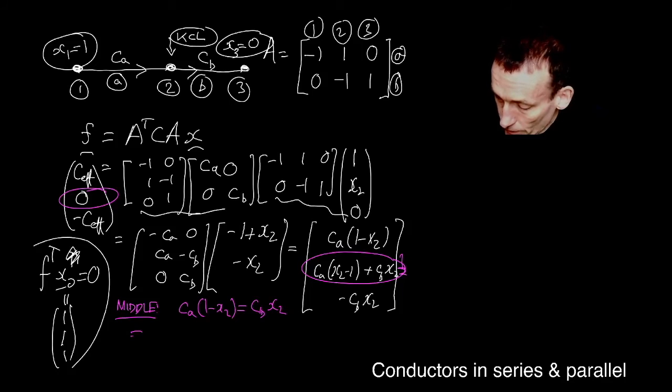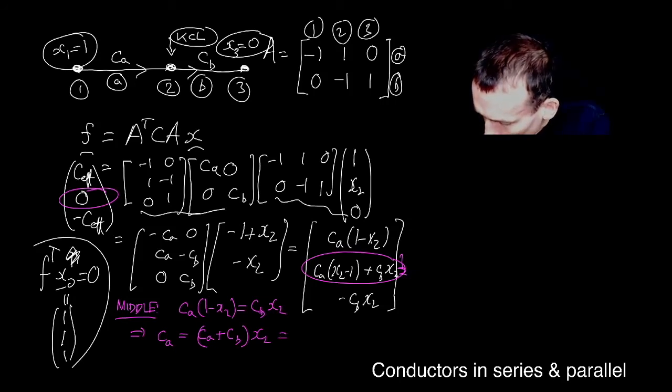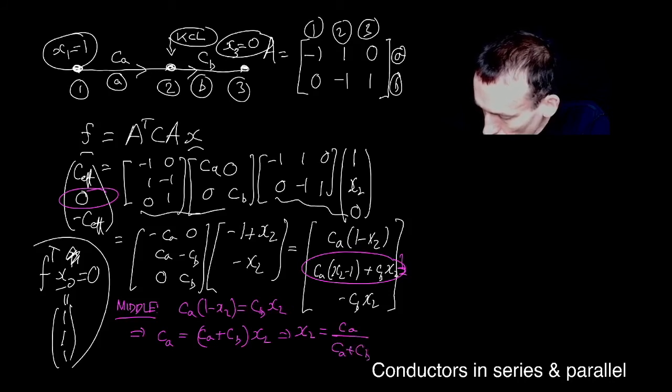So let me just rearrange that to find X two. It tells me that CA is equal to CA plus CB X two. I'm just doing this in my head. I hope I'm not making any mistakes. So doesn't that tell me that's X two. The thing that I didn't know is actually CA over CA plus CB. Interesting. I've already worked out what the voltage is at the middle node.